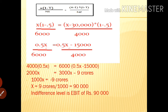For the second plan, interest is 30,000 (15% on 200 lakhs). The equation becomes: 0.5x divided by 6000 equals (0.5x minus 15,000) divided by 4000. Simplify: 0.5x divided by 6000 equals (0.5x minus 15,000) divided by 4000.